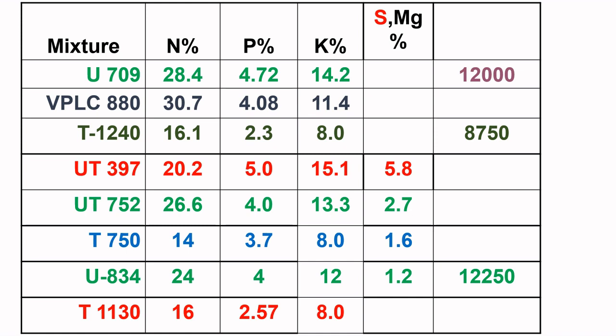U709 is the number one blend and the most popular blend in Sri Lanka. It gives 28% nitrogen, 4.7% phosphorus, and 14.2% potassium. T1240 is the next popular blend, with 16% nitrogen, 2.3% phosphorus, and 8% potassium.